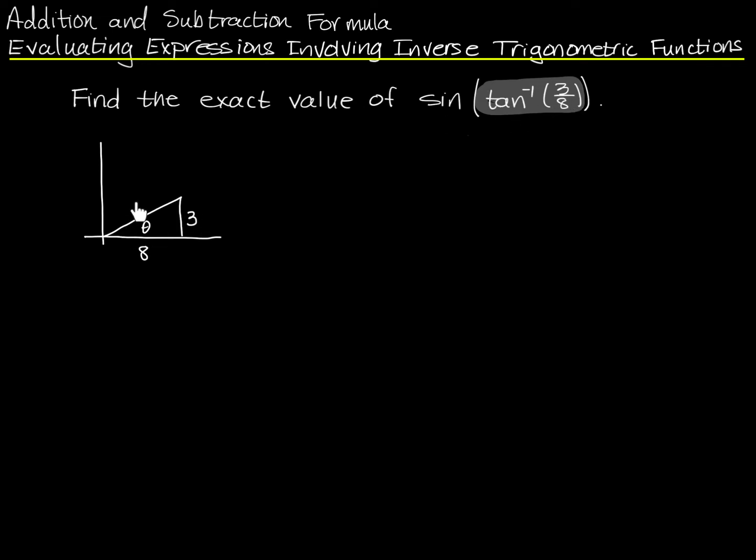The sine of this angle is opposite over hypotenuse. So all I have to do now is find the hypotenuse. Now, the hypotenuse is, we'll call it C. So C squared is equal to 3 squared plus 8 squared. And so C is equal to the square root of that. That's going to be 9 plus 64, that's 73. So my third side here is root 73.